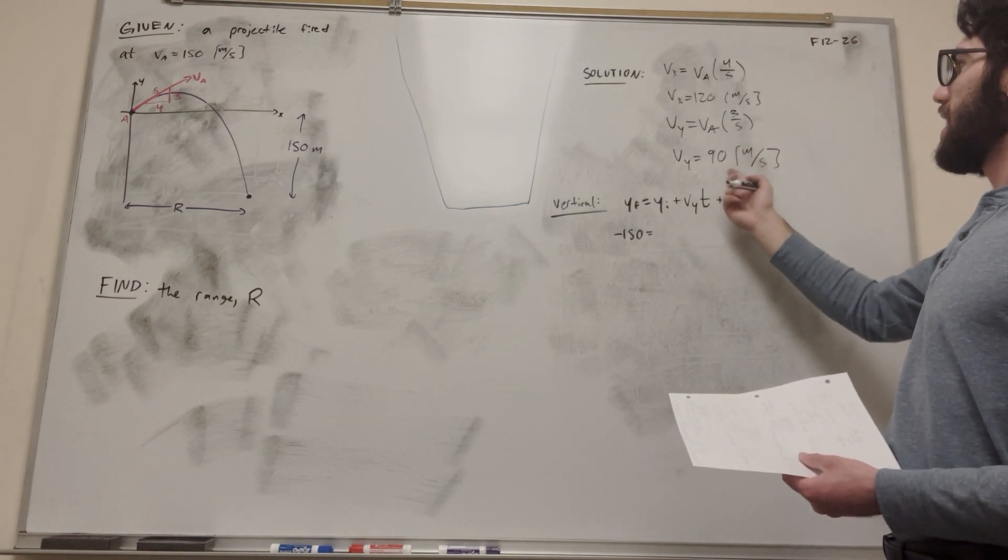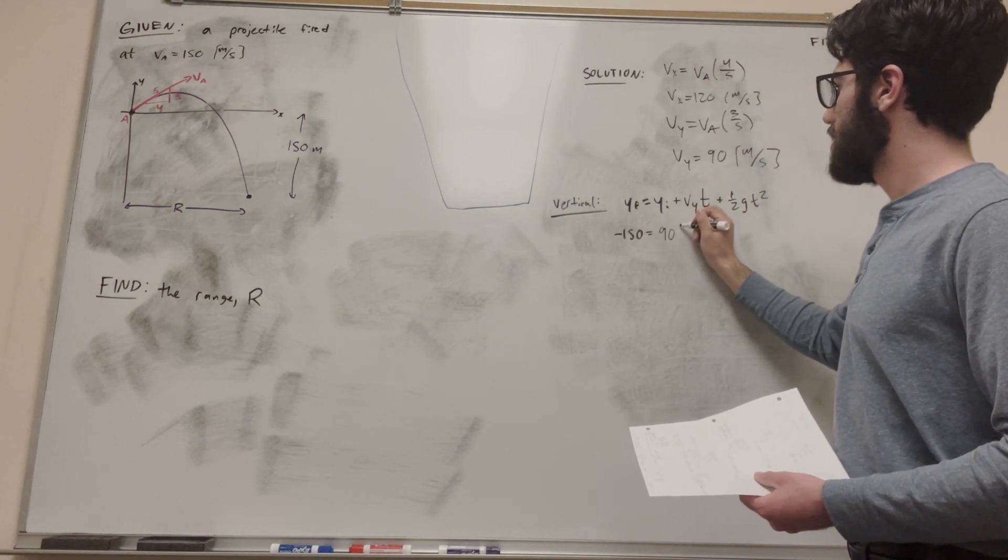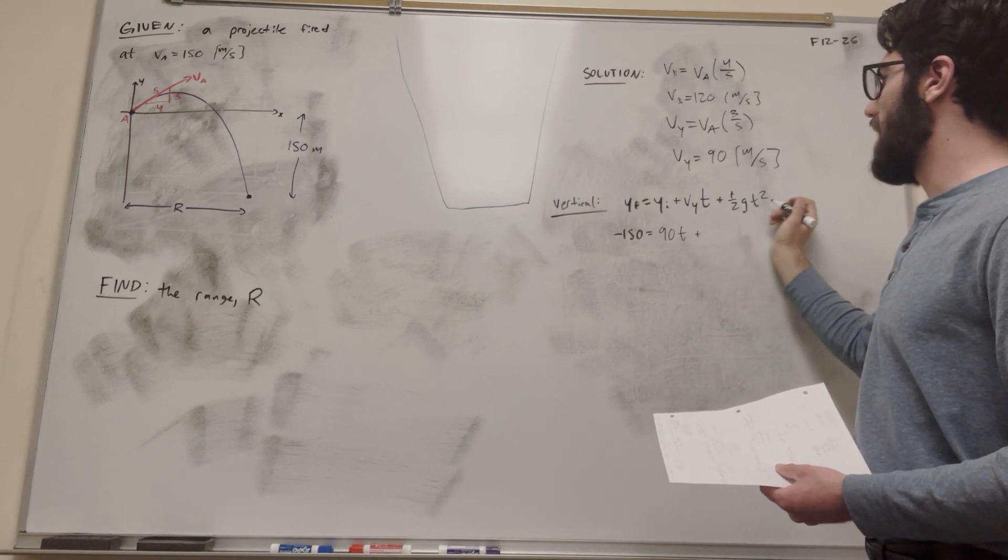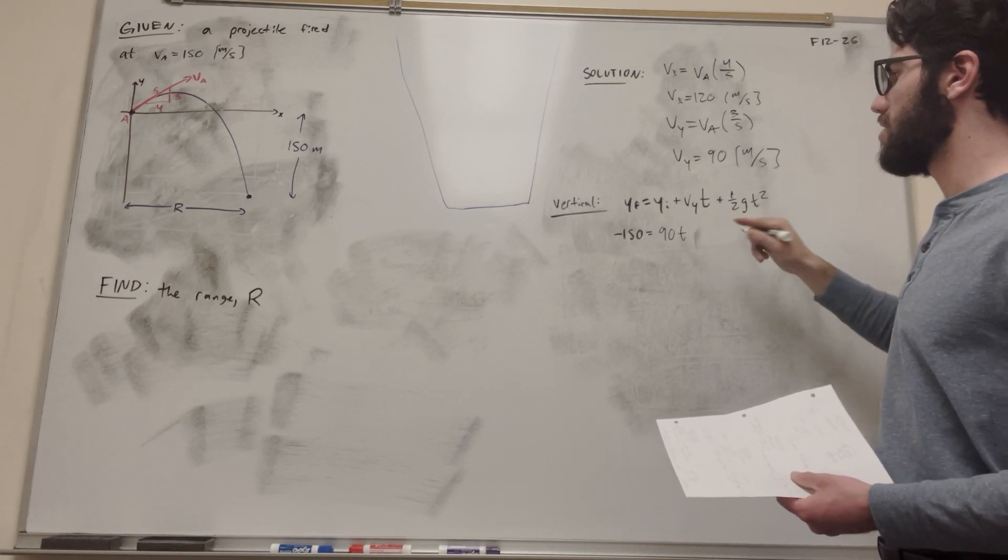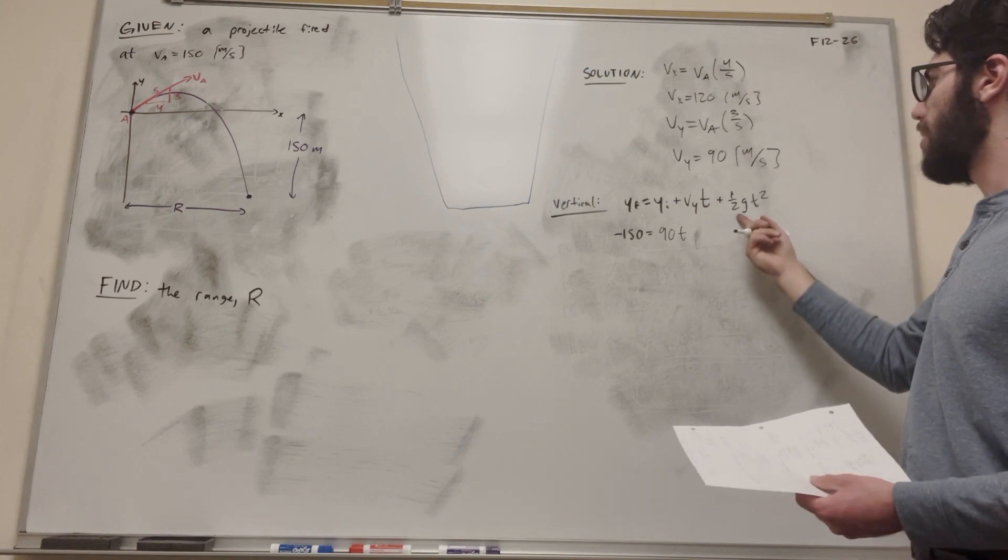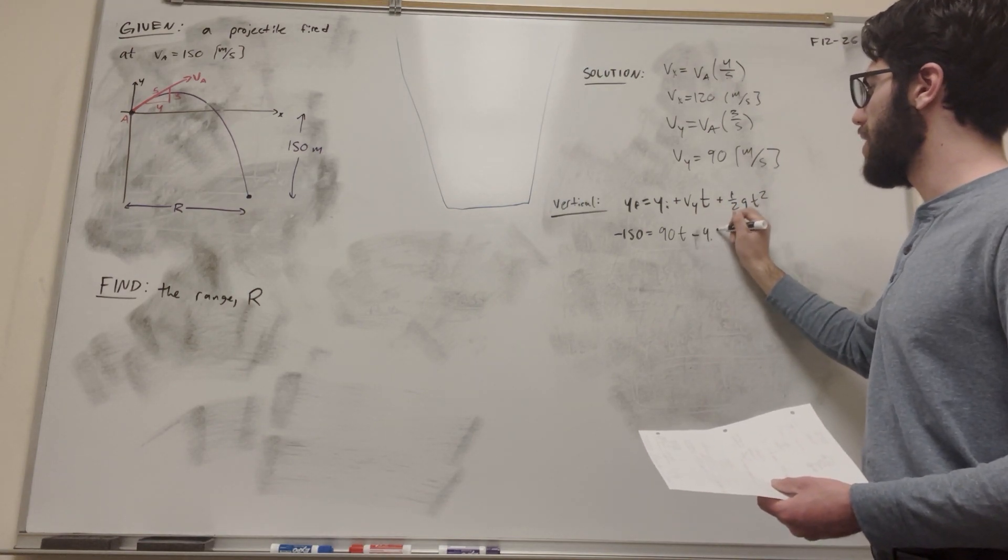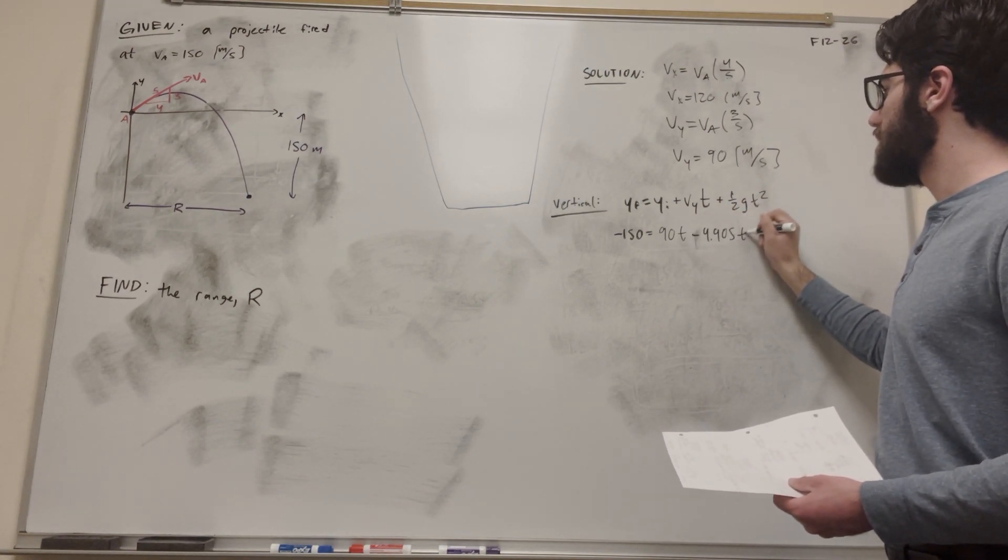Velocity y, we just calculate that. It's 90. So 90 t plus gravity is, so let's get rid of this, minus gravity is negative 9.81. I'm just going to go ahead and divide that by 2 to get 4.905 t squared.